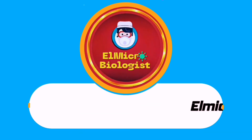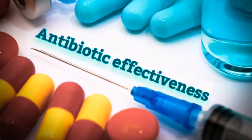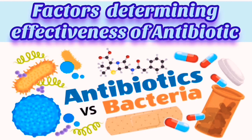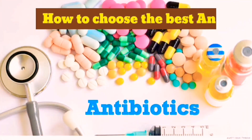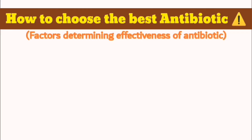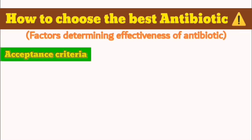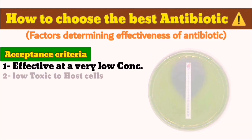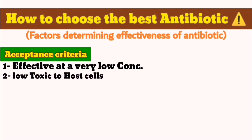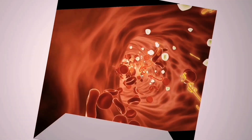Hello everyone and welcome to a new video from a microbiologist. Today we'll be talking about factors determining effectiveness of antimicrobial agents, such as antibiotics. To choose the right antibiotic, it must meet the following requirements: first, it must be effective at low concentration, low in toxicity to host cells, and only toxic to pathogenic microorganisms.